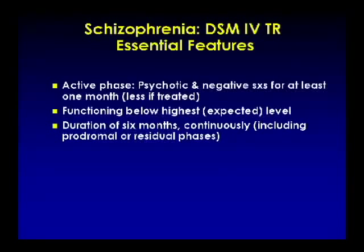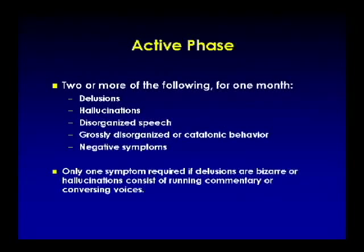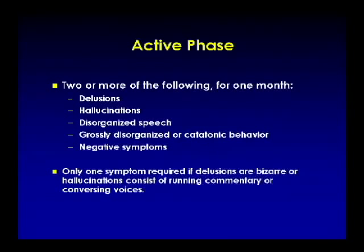The clock starts at the time when functioning level declines, not when psychotic symptoms occur. So if a patient has had a prodrome — dropped out of school, become withdrawn, become odd — that's really the start of the six-month period, as opposed to when full psychotic symptoms emerge. The active phase requires two psychotic or negative symptoms: delusions, hallucinations, disorganized speech, grossly disorganized or catatonic behavior, or negative symptoms. One exception: certain forms of delusions and hallucinations are so classic that the presence of only one meets the criteria.